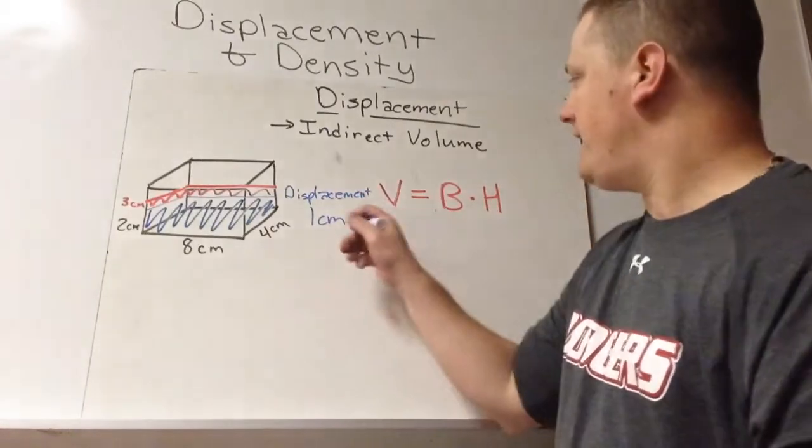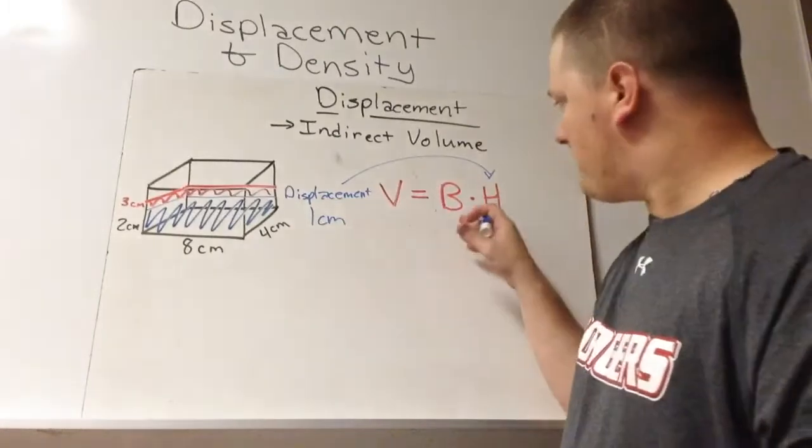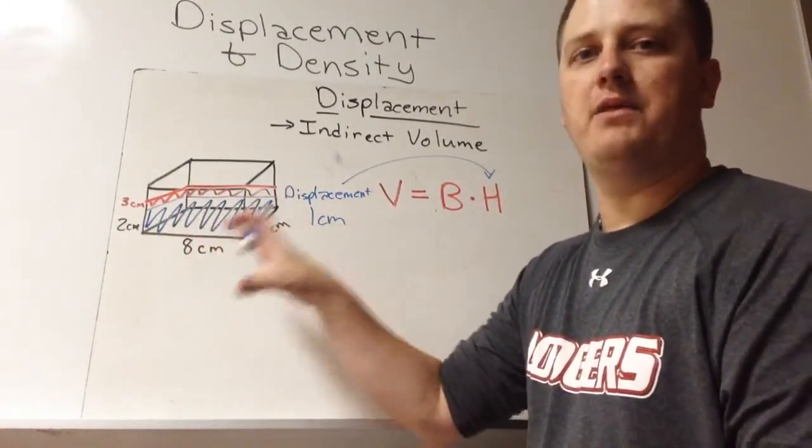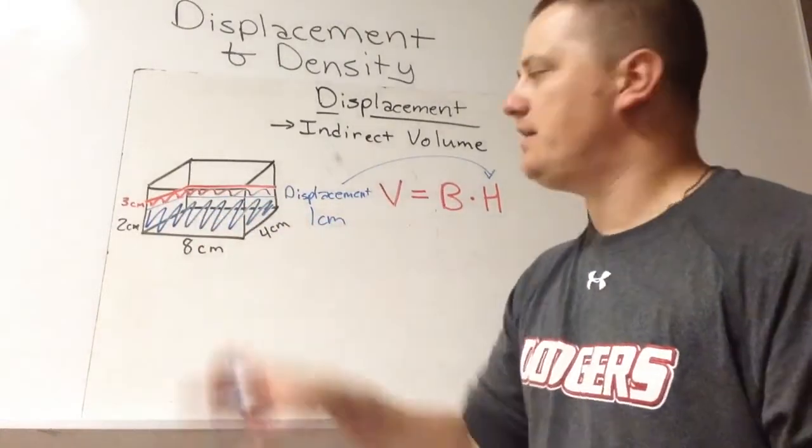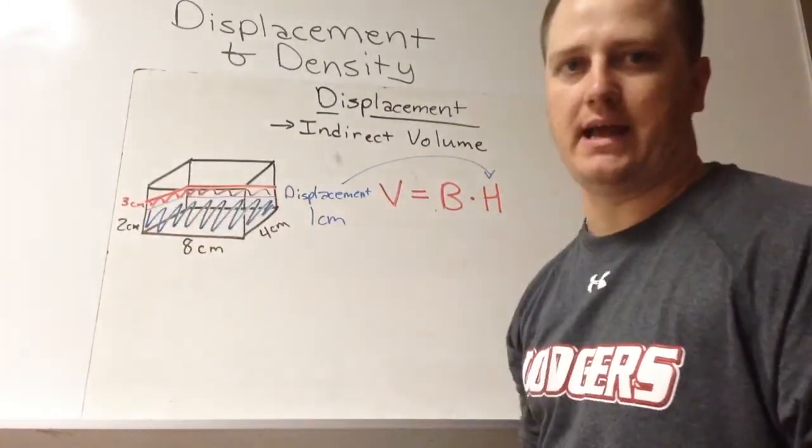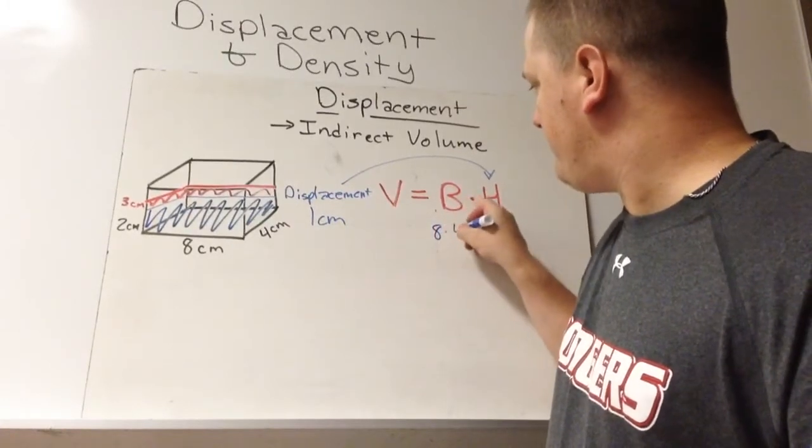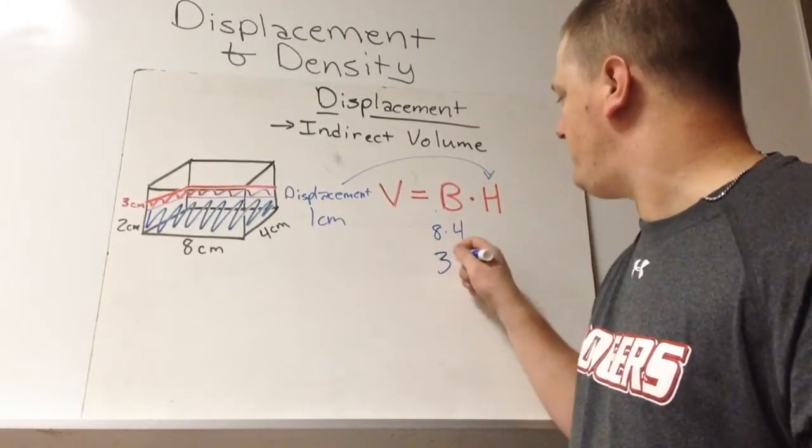The displacement is also known as the height. Our base is still the area of the base of the container. So here it would be 8 times 4, it would be this rectangle here. So we would go 8 times 4 for the area of the base, which is 32.